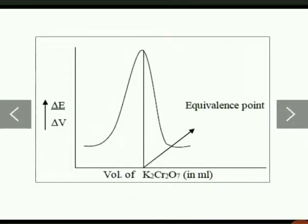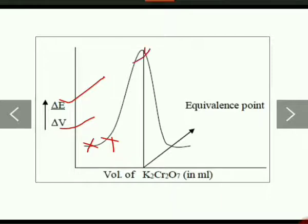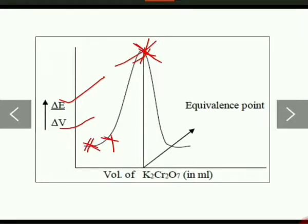The last part is plotting the graph — this plot you have also plotted in the lab. Remember, this plot is not EMF versus volume of potassium dichromate; it is change in EMF versus change in volume (ΔE/ΔV). Initially there will be a small change, then at one point there is a sudden change — because there is a shift in the combination of electrodes. Initially the indicator electrode tracks Fe²⁺ and Fe³⁺, but at the equivalence point, when Fe²⁺ becomes zero, it shifts to tracking Cr⁶⁺ and Cr³⁺. So: first a small change, then a sudden change, then again a small change in EMF value.